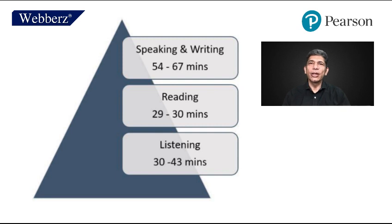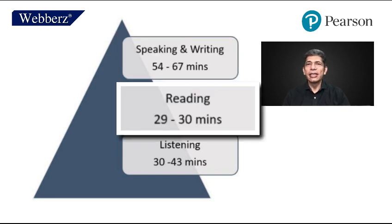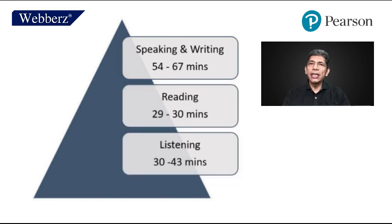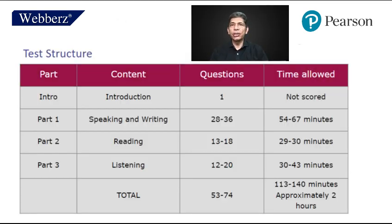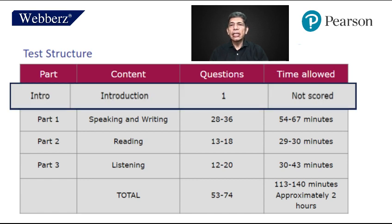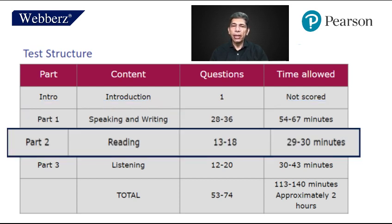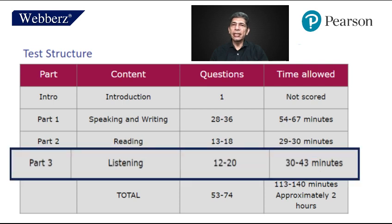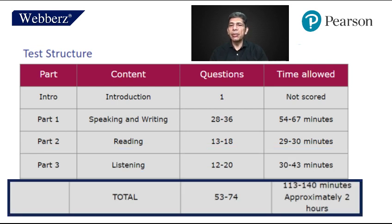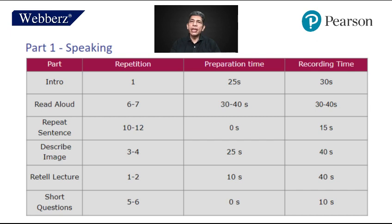Look at this pyramid — this is what it looks like. The first part is speaking and writing, second is reading, and third is listening. The test structure: the introduction is for one question and it is not scored. Part 1 is speaking and writing, with 28 to 36 questions and 54 to 67 minutes allowed. Part 2 is reading, with 13 to 18 questions and 29 to 30 minutes allowed. Part 3 is listening, with 12 to 20 questions and 30 to 43 minutes allowed. The total questions are 53 to 74 and total time is 113 to 140 minutes, which is approximately 2 hours.